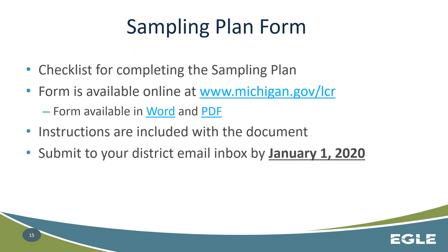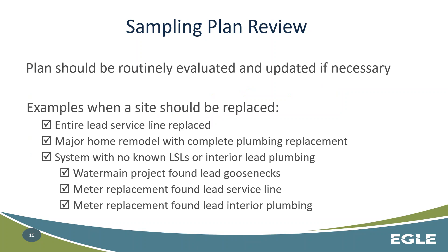The document is available online in either Word or PDF format, depending on whether you'd like to fill it out online. You should submit it to your local district email box by January 1, 2020. These plans are not static documents — they should be routinely evaluated, especially if you find something in your distribution system that's of a higher tier that you should be sampling and should be included in your plan.